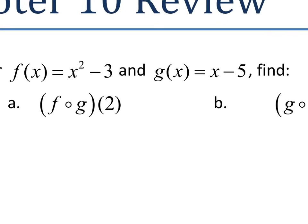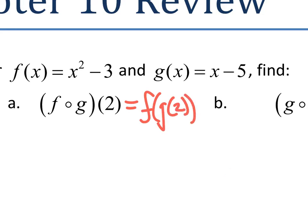So this f composed with g — first thing we need to do is write this as f of g of 2. We've got to figure out what g of 2 is first. So we plug 2 into the function g up here, and we get 2 minus 5, which is negative 3.